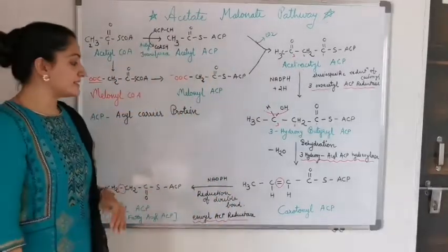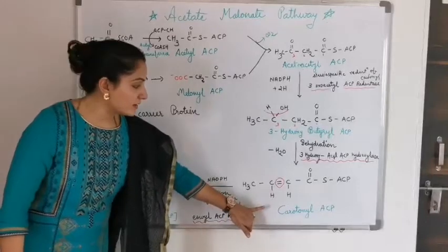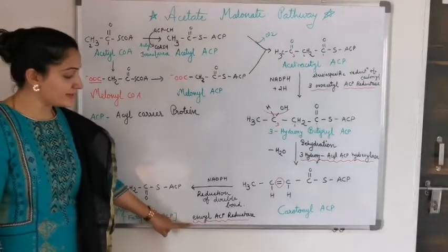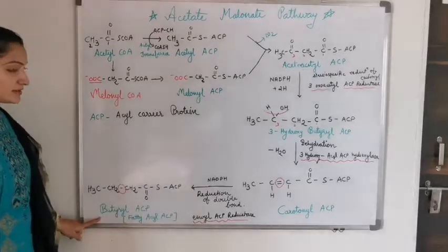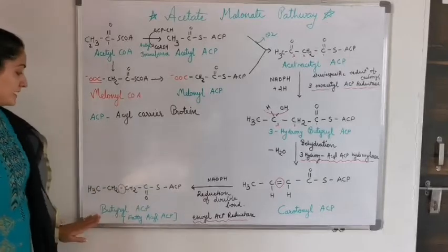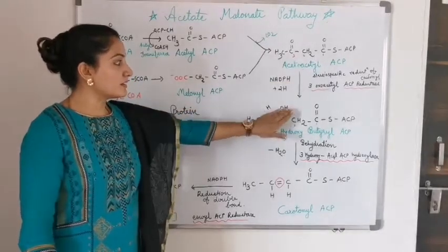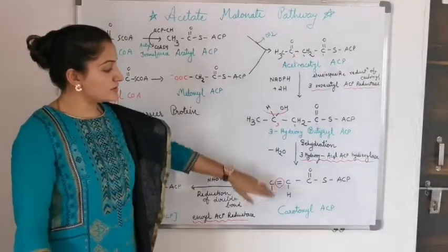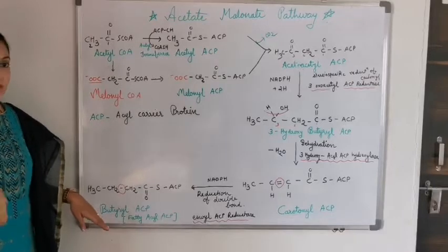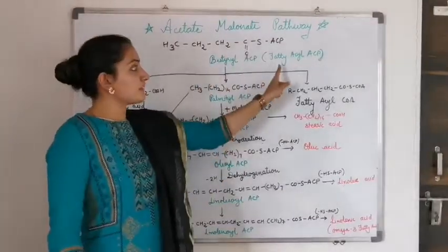Crotonyl ACP undergoes further reduction of the double bond in the presence of NADPH — addition of 2 hydrogen molecules — converting CH=CH into CH₂–CH₂. This occurs in the presence of enoyl ACP reductase. The compound formed is butyryl ACP, also known as fatty acyl ACP. So from acetoacetyl ACP: reduction gives 3-hydroxybutyryl ACP, dehydration forms a double bond, and reduction of that double bond gives butyryl ACP. This butyryl ACP gives fatty acid (RCH₂CH₂COOH) and also fatty acyl CoA.